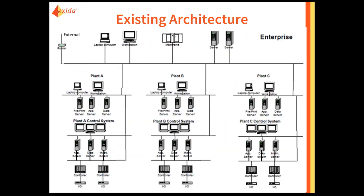As an extreme example we have seen in the field: enterprise architecture goes out to the Internet, three plants connect to that enterprise architecture down to the control system, and from there straight down to layer one and layer zero devices — your PLCs and I/O. Also at the layer two level there are dual-homed servers connecting two separate networks, which is the least secure segmentation method, allowing threats to propagate across both networks.